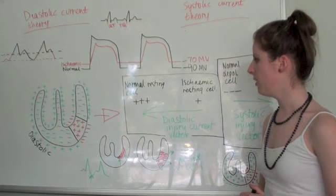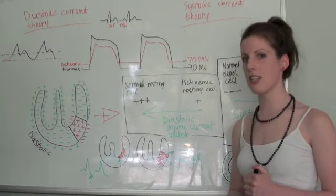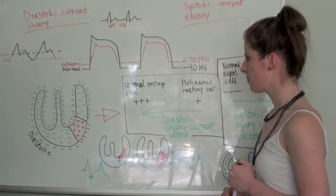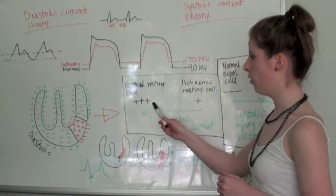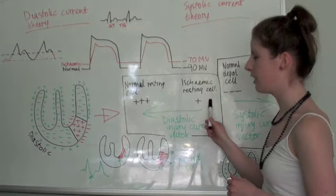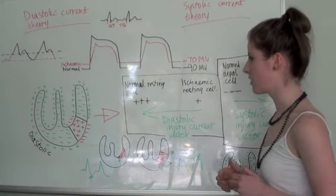So we come over here which explains it in a slightly different way. So the normal resting cell is very positive compared to the only slightly positive ischemic resting cell.